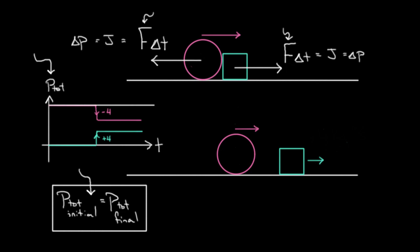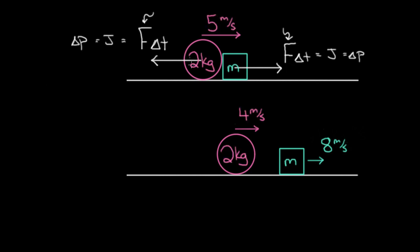So let me show you how this works real quick, just to give you an idea, numerically here. So let's say the pink ball was two kilograms, and it was going five meters per second to start, and the green cube had a mass m, and afterward, let's say the pink ball is going four meters per second, so it's slowed down, and the green cube speeds up. Let's say it's going eight meters per second.